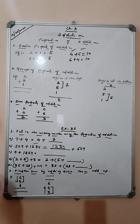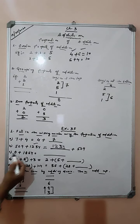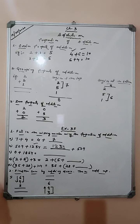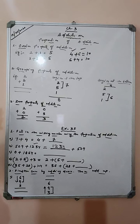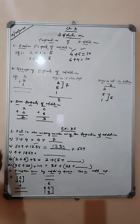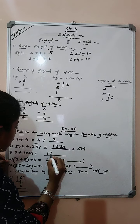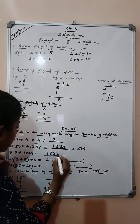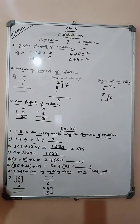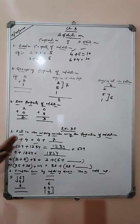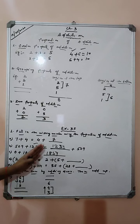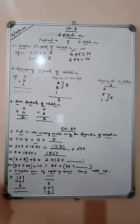Now 0 plus 1854. We have already learnt the zero property of addition. If 0 is added to any number, the answer is the number itself. So the answer will be 1854 only.